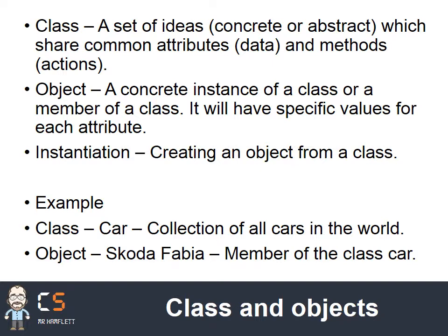An object is a concrete instance of a class, or a member of a class. It will have specific values for each of the attributes. So for example, if I think about my class 'car', I could have a concrete example of it, which might be a Ford Mondeo. So objects are examples of something within a class. We have another word I'll be using a fair bit: instantiation. Instantiation is when you create an object from a class.